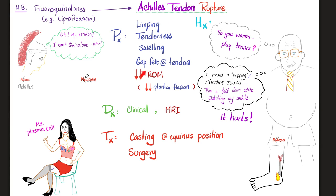There is a gap because the tendon ruptured, leaving empty space. Asking the patient to move reveals decreased range of movement, especially decreased plantar flexion, because the Achilles tendon used to perform plantar flexion as the tendon of the gastrocnemius and soleus muscles. The patient cannot plantar flex the ankle. You have your diagnosis by history and physical exam alone. If you want to confirm it, do an MRI and you will see the tendon rupture.